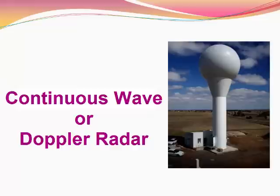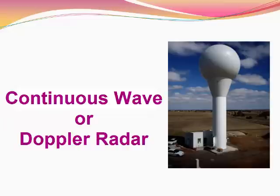In cars, both types of fuels serve the main purpose, but cars have a different structure depending on the fuel used, and both types have their own advantages and disadvantages. Similarly, in radars we have two types: the pulsed radar which we discussed already, and the Continuous Wave Radar or CW radar. In this class, we are going to see the details about CW radar and a comparison between the two types.